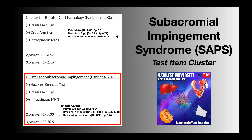When any two of these tests are positive — it doesn't matter which two — the positive likelihood ratio for subacromial impingement is 5.03. When all three are positive, the positive likelihood ratio jumps to 10.6. A positive likelihood ratio of 5 would be moderately good, so there's a decent chance that they have subacromial impingement. Anytime you have a positive likelihood ratio of at least 10, that is an excellent likelihood ratio, and it is very likely that they have that condition. So if you really want to confidently say that a patient has subacromial impingement, you need all three of these tests to be positive, because that gives you a positive likelihood ratio of at least 10.